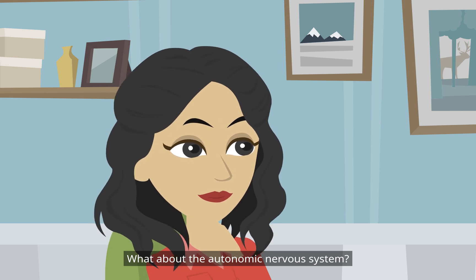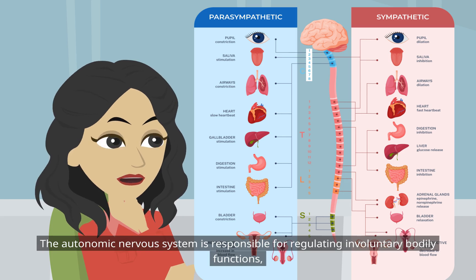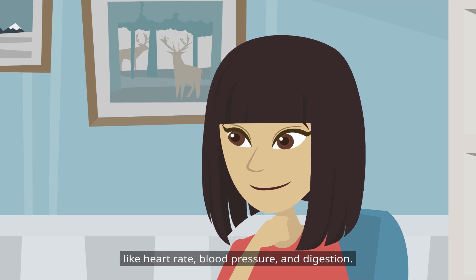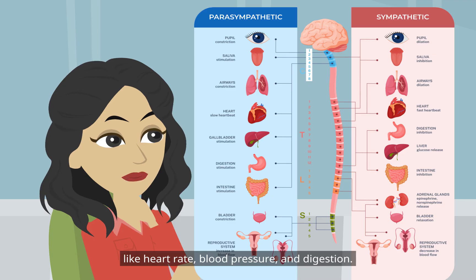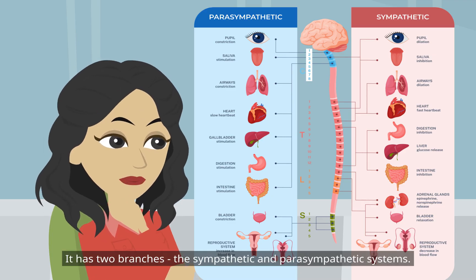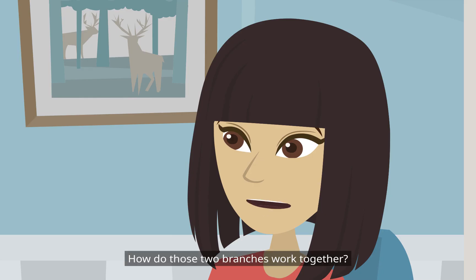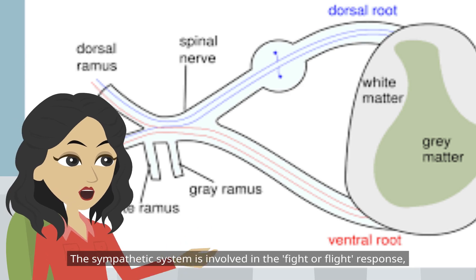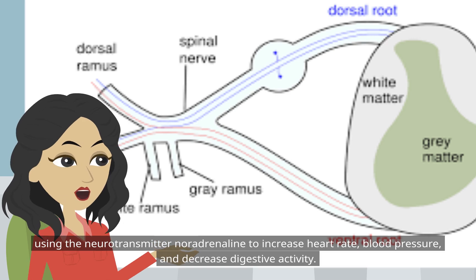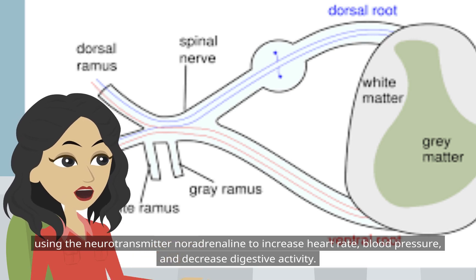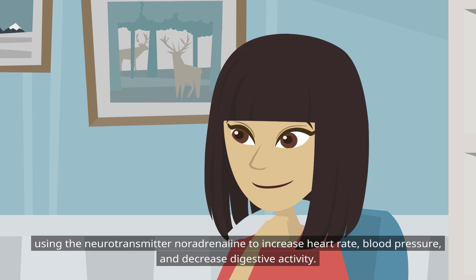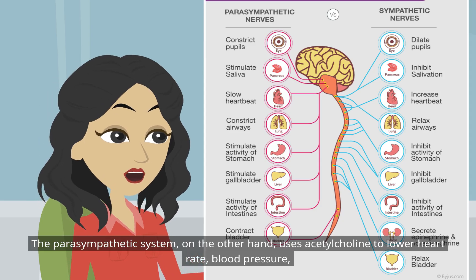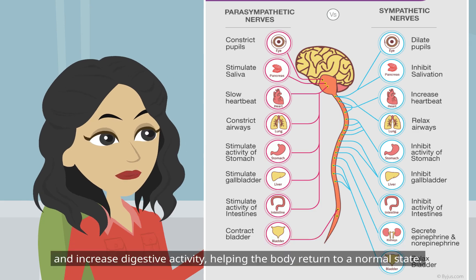What about the autonomic nervous system? The autonomic nervous system is responsible for regulating involuntary bodily functions like heart rate, blood pressure, and digestion. It has two branches: the sympathetic and parasympathetic systems. The sympathetic system is involved in the fight-or-flight response, using the neurotransmitter noradrenaline to increase heart rate and blood pressure, and decrease digestive activity. The parasympathetic system uses acetylcholine to lower heart rate and blood pressure, and increase digestive activity, helping the body return to a normal state.